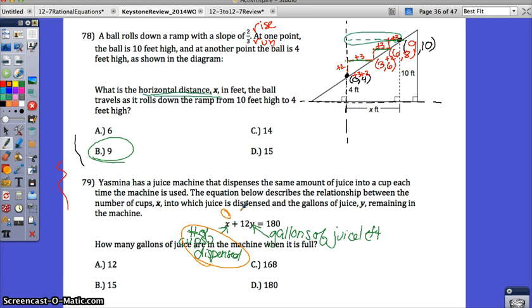So if you cover up x when you're solving, or put in 0 for x, the equation that you would have left is 12y equals 180. 12y equals 180, divide by 12, and y equals 15. So your correct answer would be B, 15 gallons are in the machine when it is full.